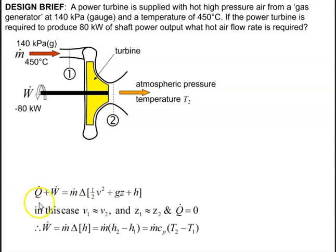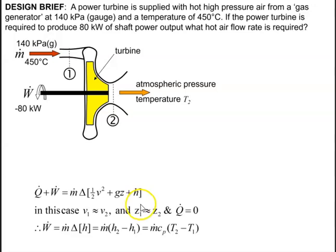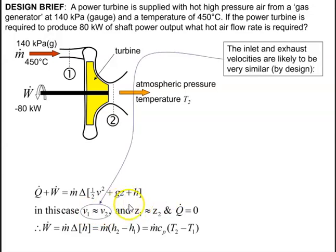We use the SFEE equation: q-dot plus w-dot equals m-dot times the sum of one-half v-squared, plus g-z, plus h — where m-dot is mass flow per second, h is enthalpy. In this case, v1 equals v2 and z1 equals z2 and q-dot is zero. The inlet and exhaust velocities are assumed equal.